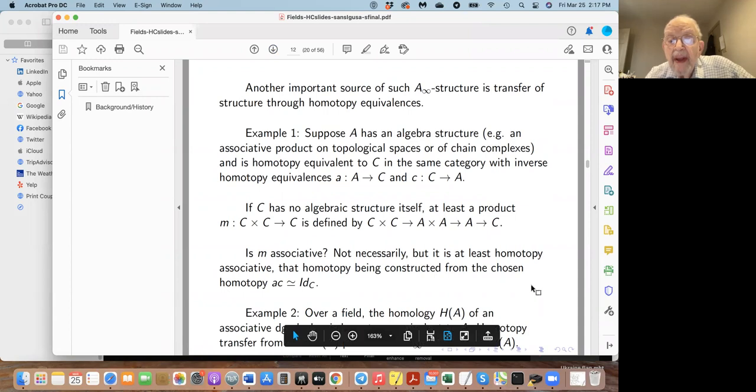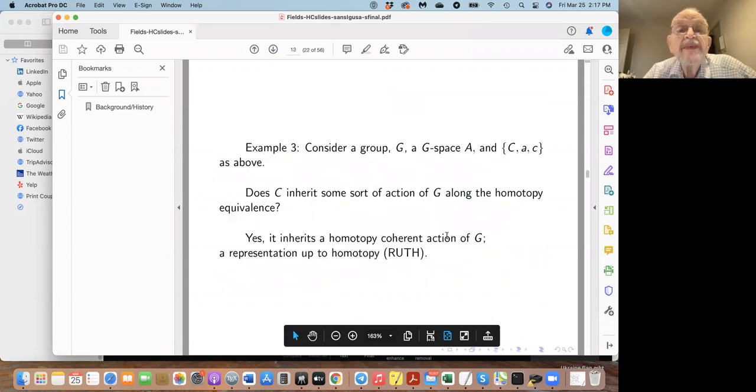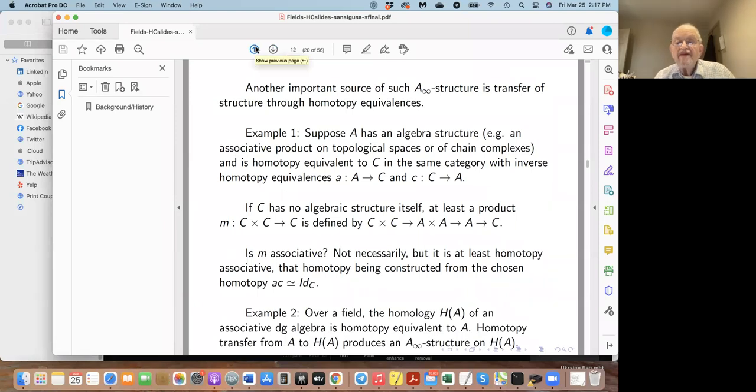It's a good exercise to get a feeling for what's going on just by chasing through that particular question of homotopy associativity. But it then carries on, and there's a whole machinery to show that you get an A∞ structure. Another example: over a field, the homology of an associative DG algebra is homotopy equivalent to A. The homotopy transfers from A to H(A) and produces an A∞ structure on H(A). That A∞ structure on H(A) makes it equivalent to A, not as an associative algebra but as an A∞ morphism.